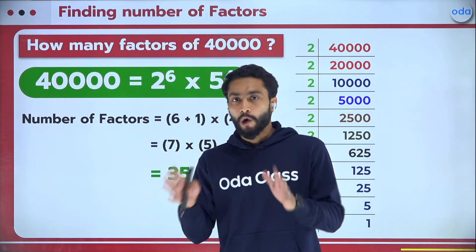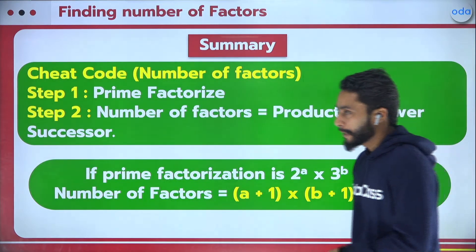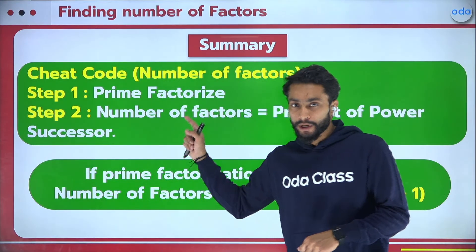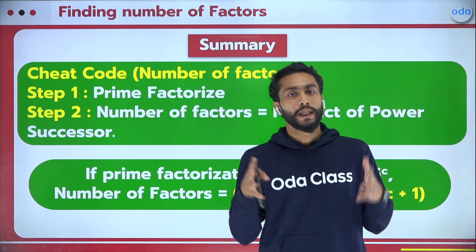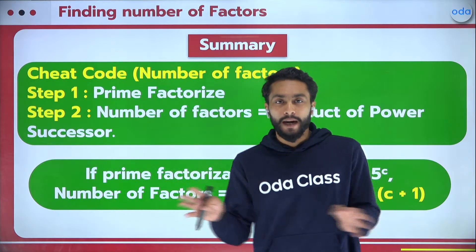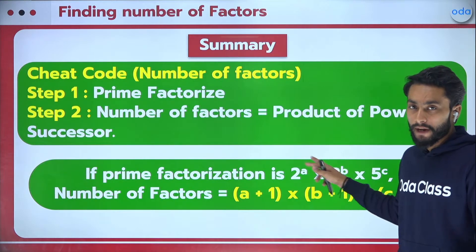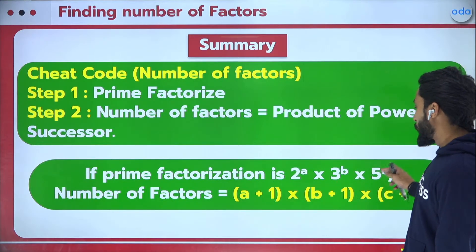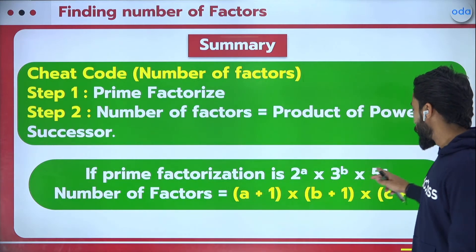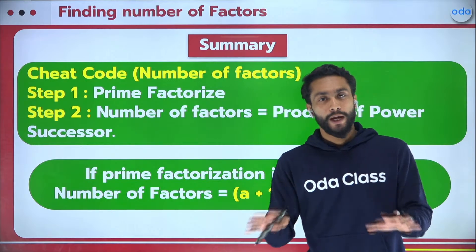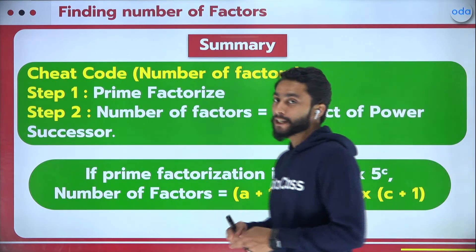To summarize the trick: the steps are very simple. First, prime factorize the number. Second, note the powers of each prime. Third, multiply the successors of those powers — and that gives you the number of factors. In general form: if a number = 2^a × 3^b × 5^c, then number of factors = (a+1)(b+1)(c+1). Very easy!